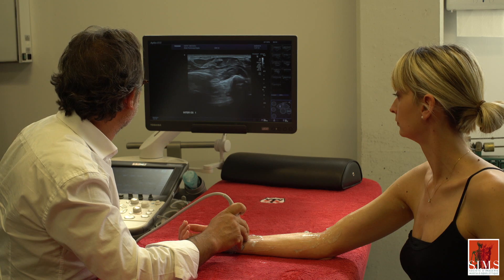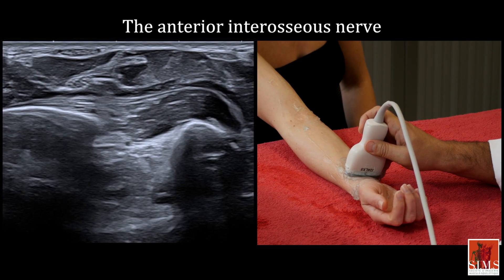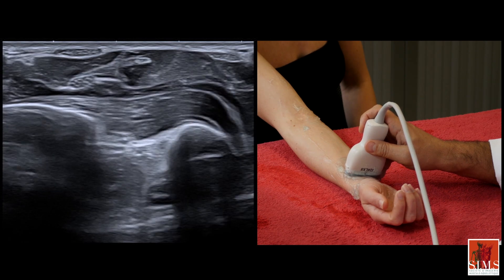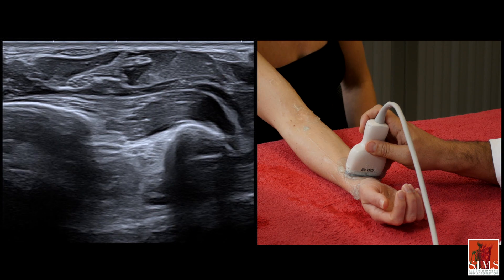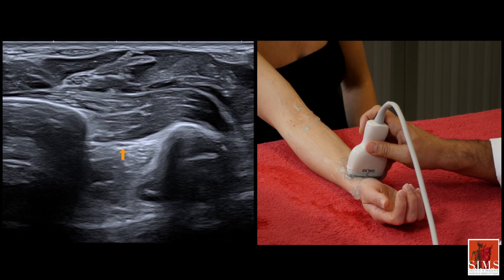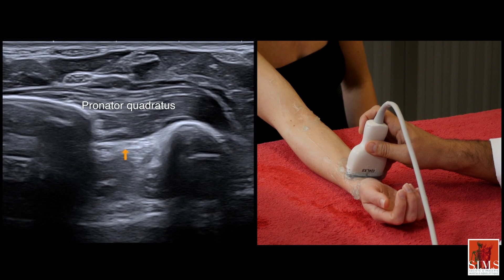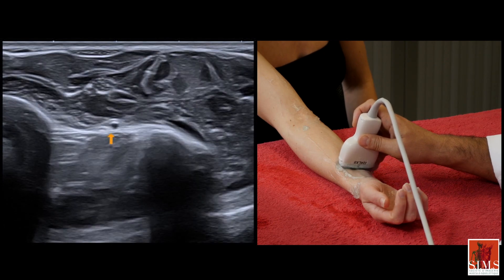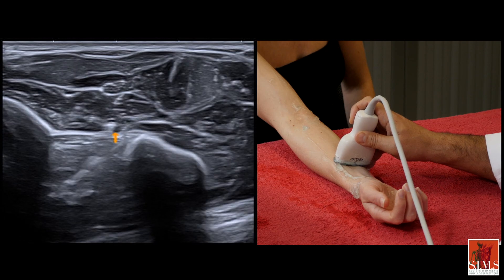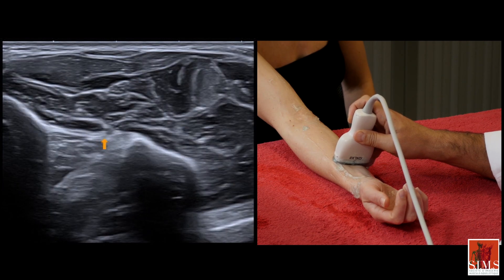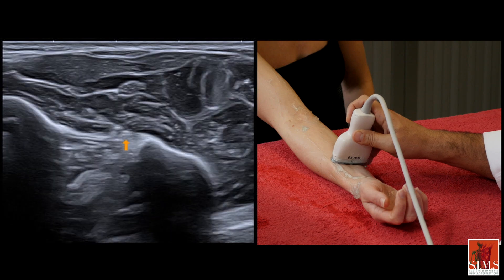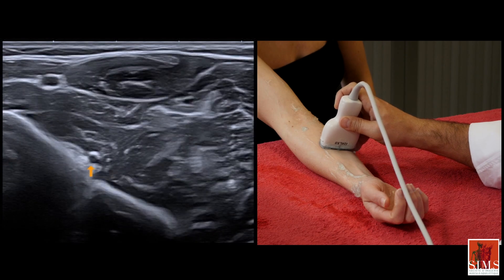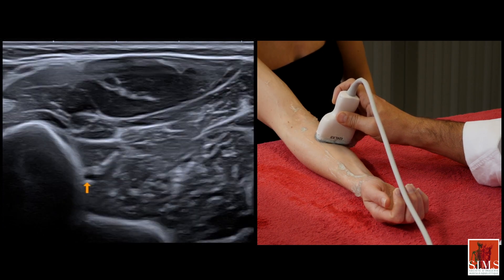We are now going to focus on an important collateral branch of the median nerve: the anterior interosseous nerve. From a technical point of view, it is easier to see it from its distal end below the pronator quadratus. Using the elevator technique, we are going to follow this branch, or neurovascular bundle, in front of the interosseous membrane. This anterior interosseous nerve is going to join the median nerve three to four centimetres below the elbow fold.